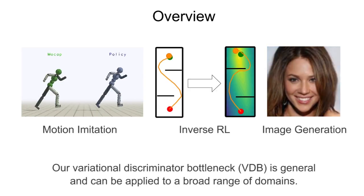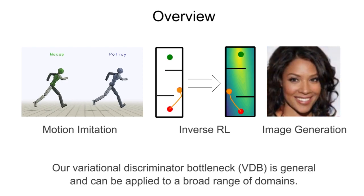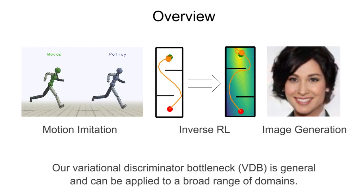Our variational discriminator bottleneck, or VDB, is general and can be applied to a broad range of domains.